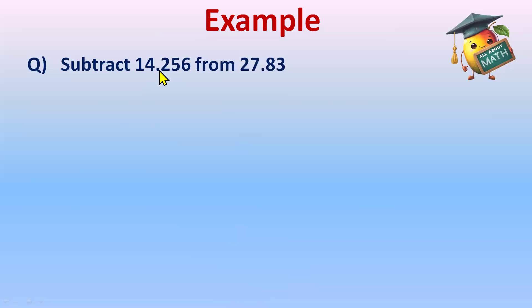It means 14.256 is subtracted from this number. It means this will come first: 27.83 minus 14.256. So first we'll write that, and then we'll convert the given decimal numbers into like decimals. I'll be doing that step.